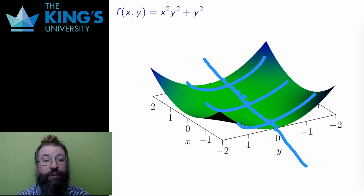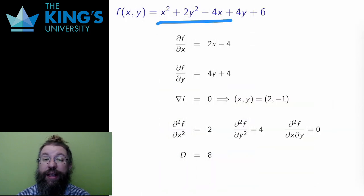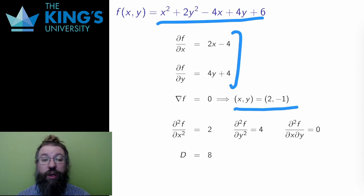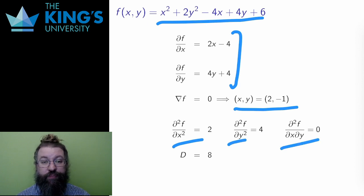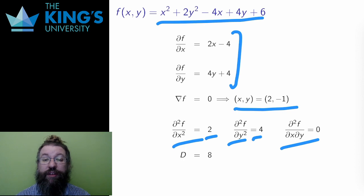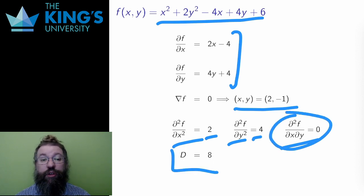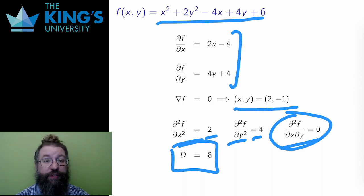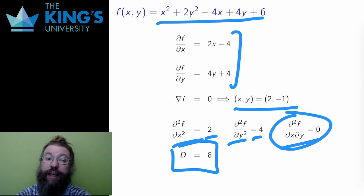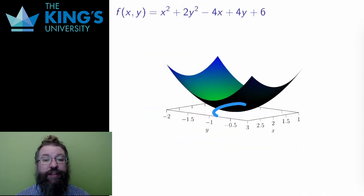Here is another example — another scalar field of two variables. I calculate the partials and set them both to zero. In this case, the origin is the only solution. Then I calculate the second partials and the Hessian determinant. D is the product of the pure partials minus the mixed partial squared, which is just zero squared, so D equals 8. This is positive, and the pure partial in x is also positive — such data indicates a minimum. And if I look at the graph, I do indeed see that there is a minimum at the point (2, -1).